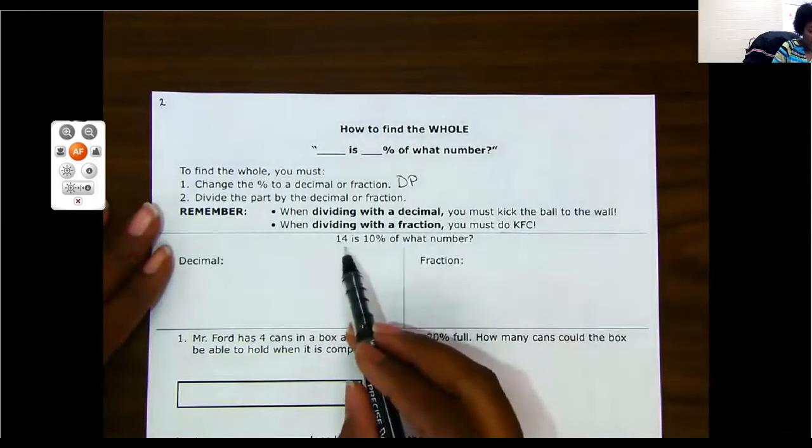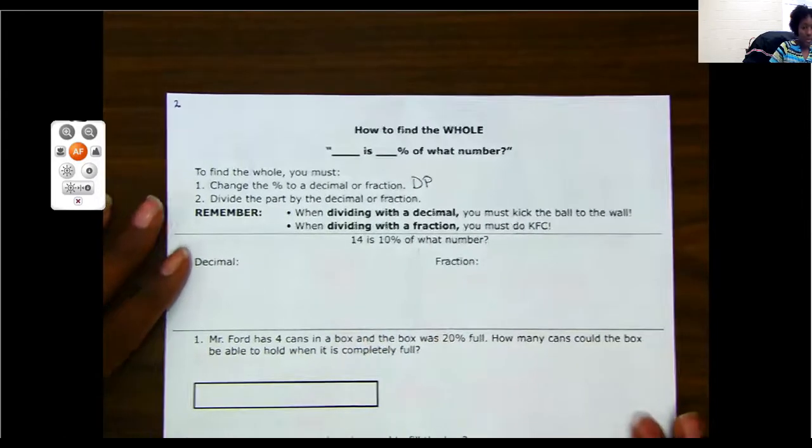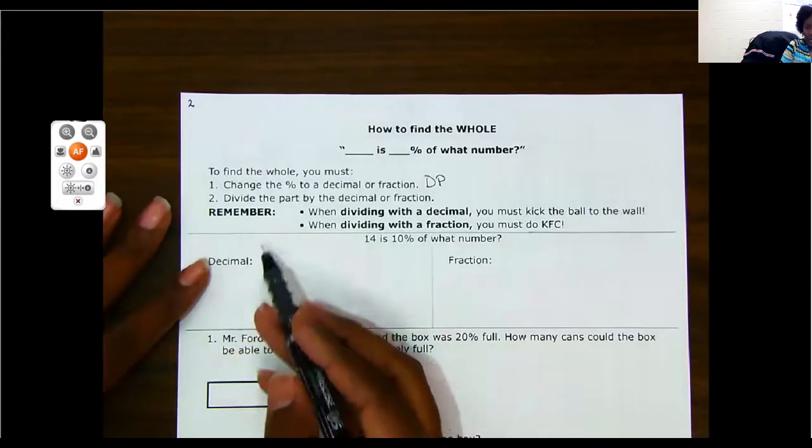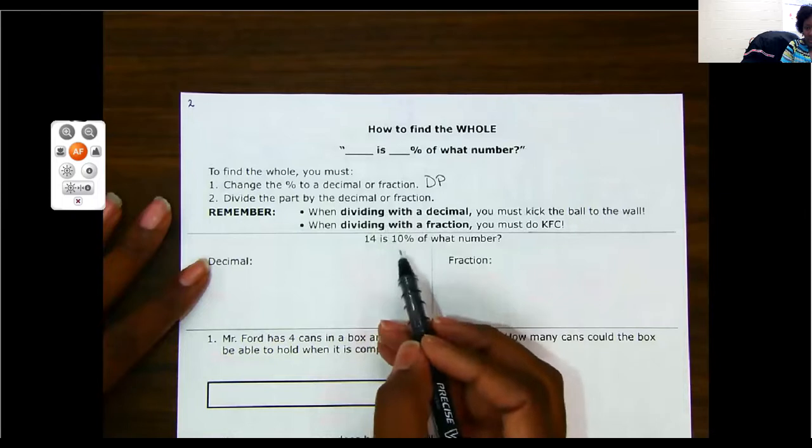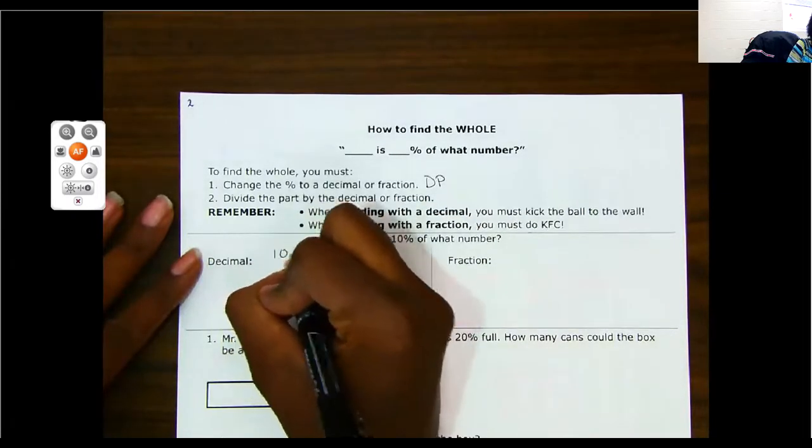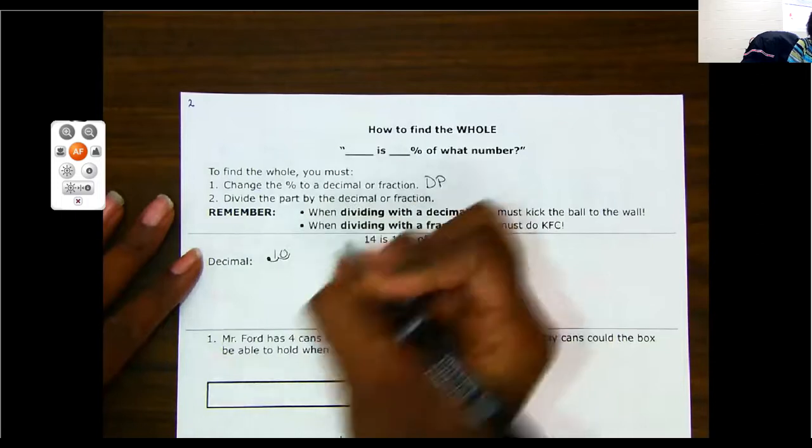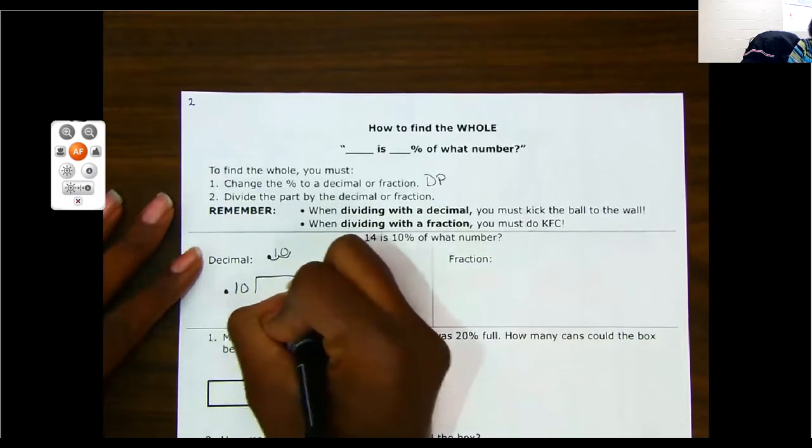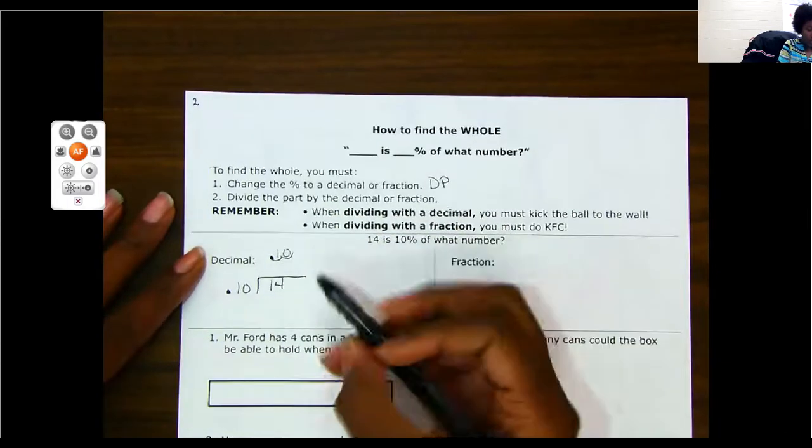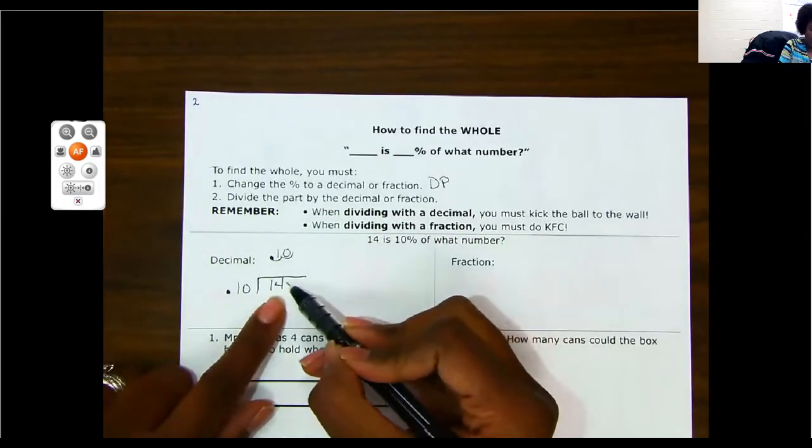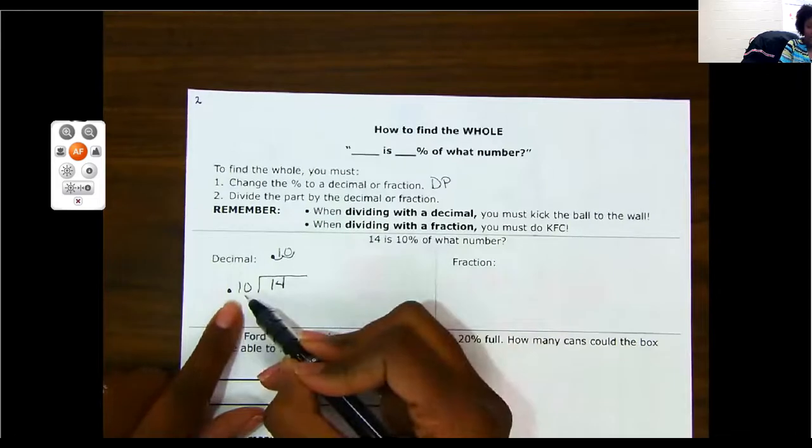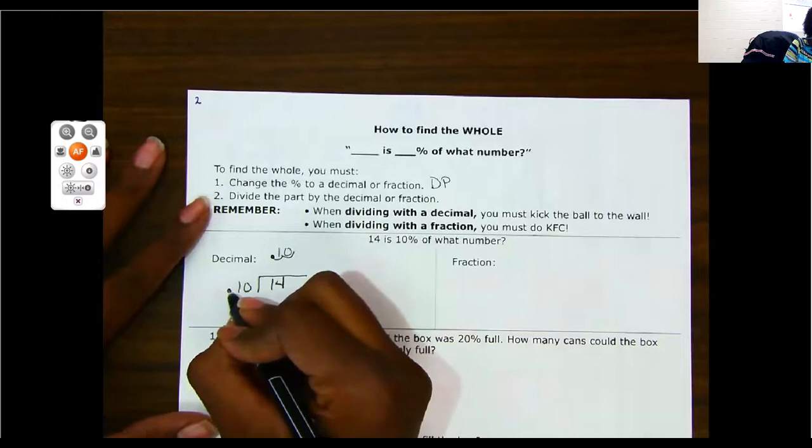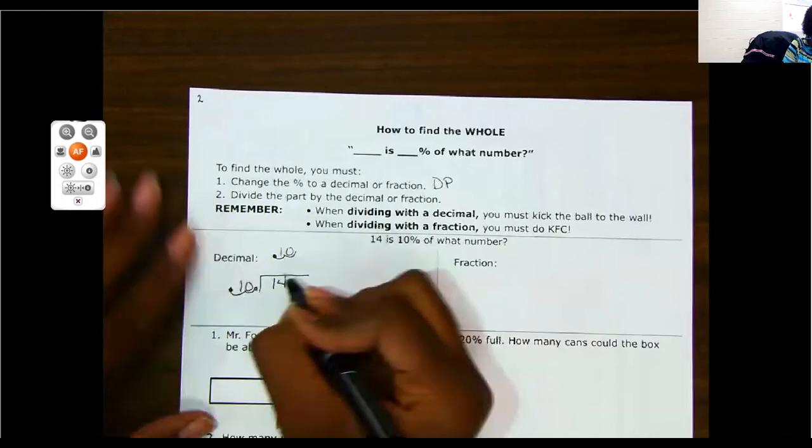Okay, so let's use our first example: 14 is 10% of what number. So first, we're going to do it with a decimal. Okay, so it says change the percent to a decimal. So 10%, start from the back one, two is point 10. I'm going to put my point 10 and I'm dividing that by 14 because 14 is my total.